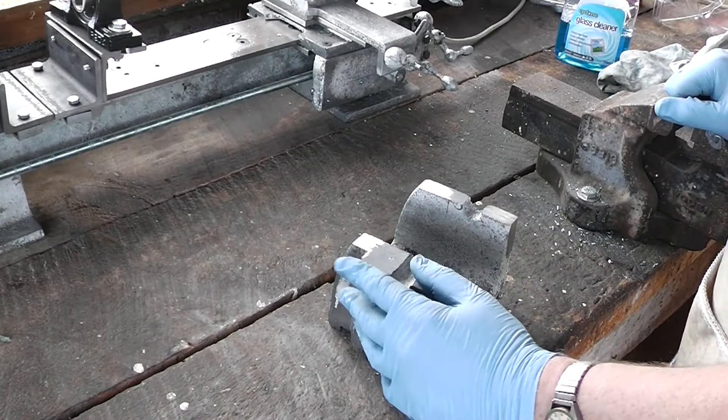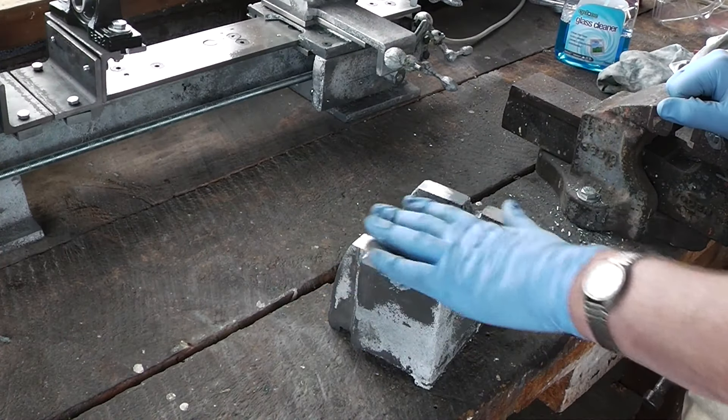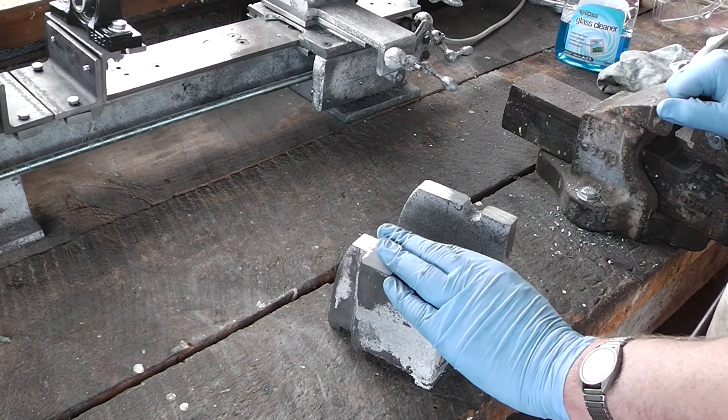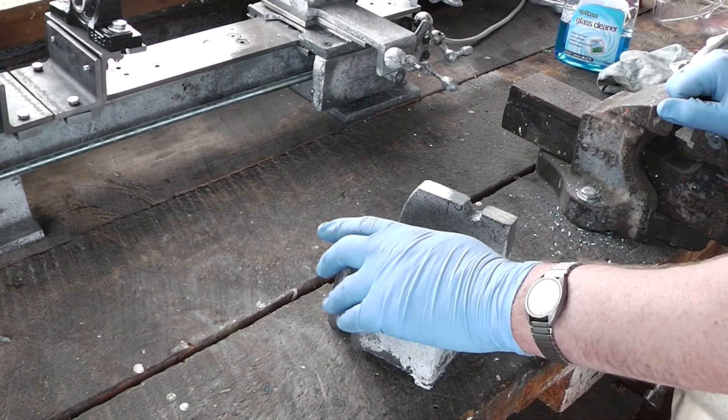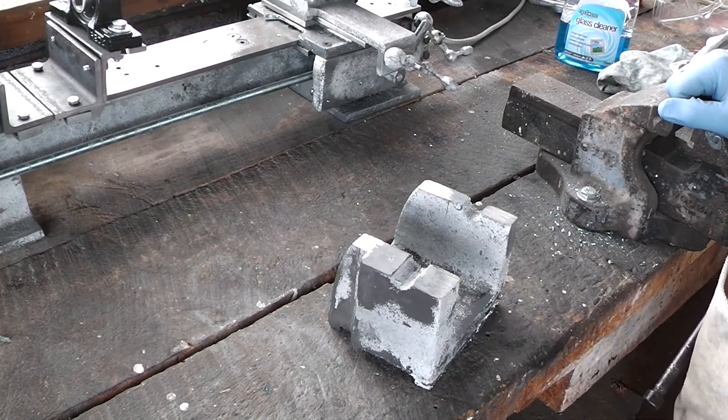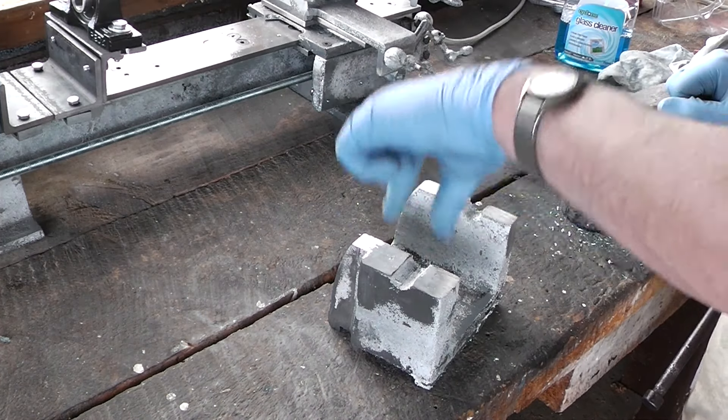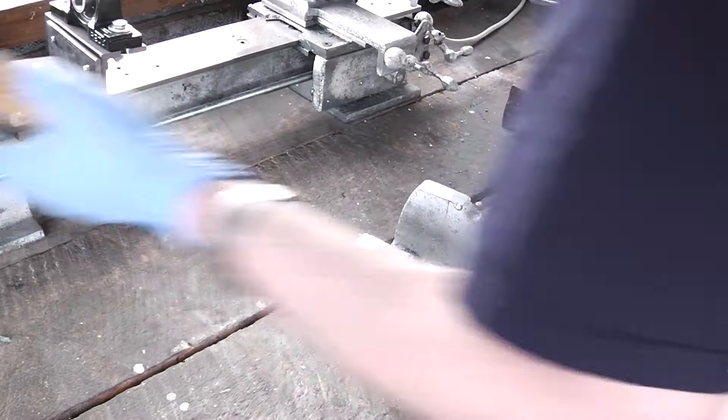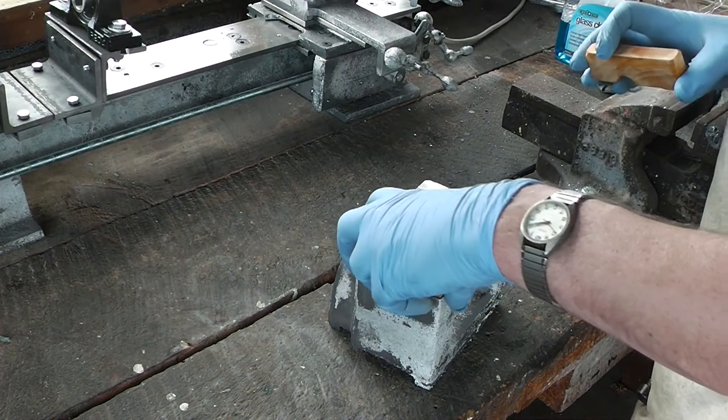Alright, next order of business is to scrape this top surface in, cast the bearing caps that will go on top of it, scrape those in so they mate with it, then drill some bolts to bolt the caps on. These are the patterns for the caps.